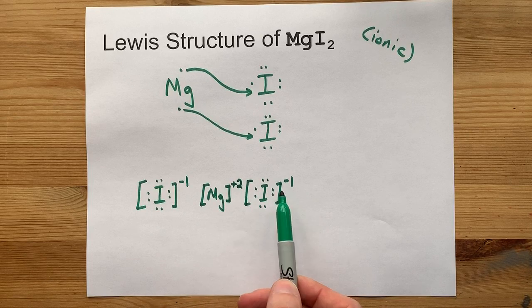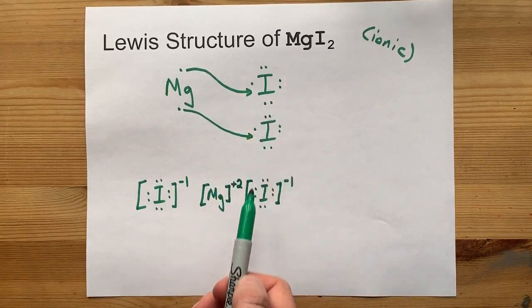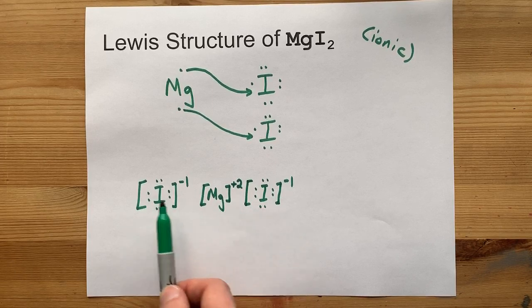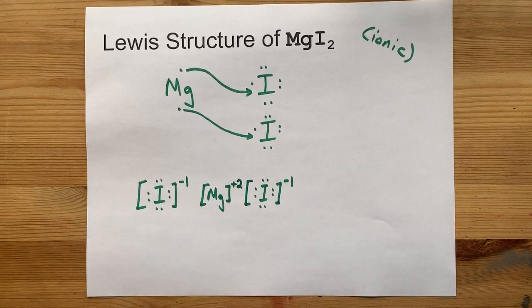That magnesium no longer has its electrons. So don't put any dots on it, but do show that it gave away two electrons by giving it a plus two charge. This is my full and complete Lewis structure of magnesium iodide: Mg²⁺ and then two I⁻ complete with full outer shells.